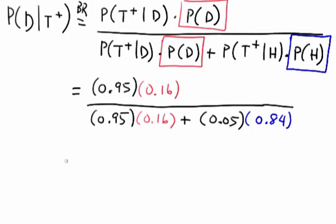Now again, I am going to let you punch that into your calculator to convince yourself that the numerator is 0.152 and the denominator is 0.194. And if you divide that out, you get 0.78.